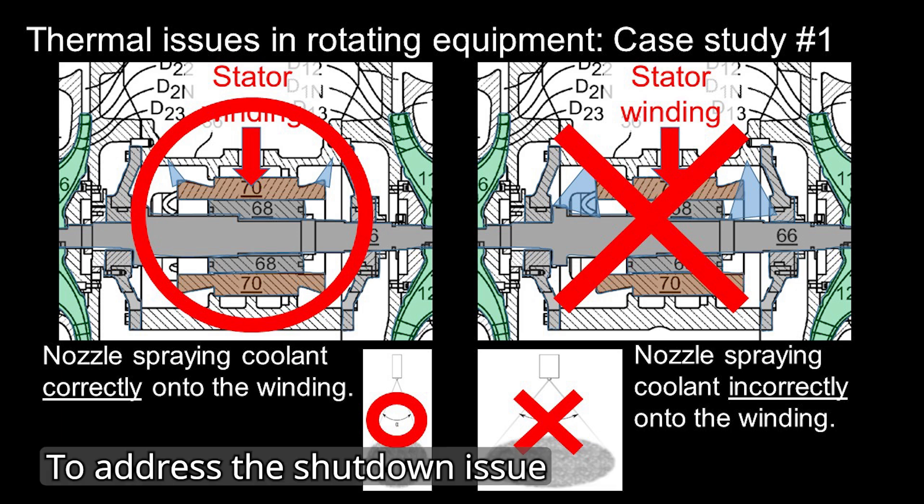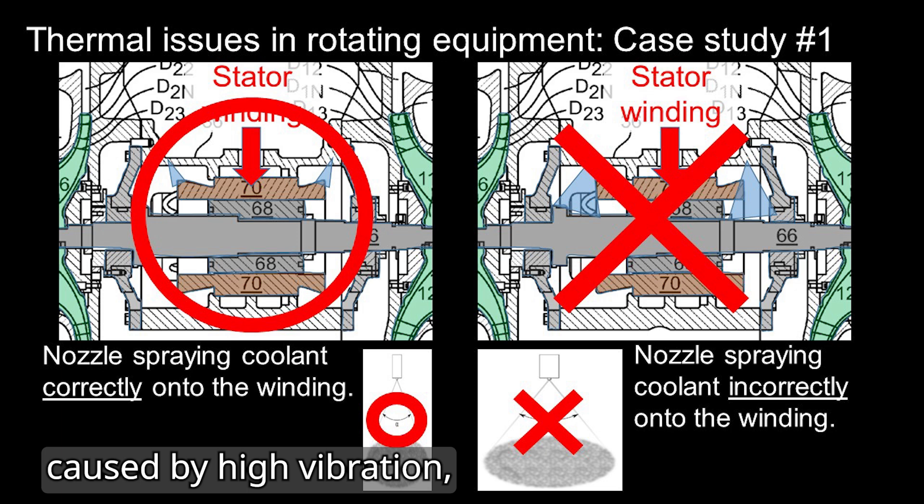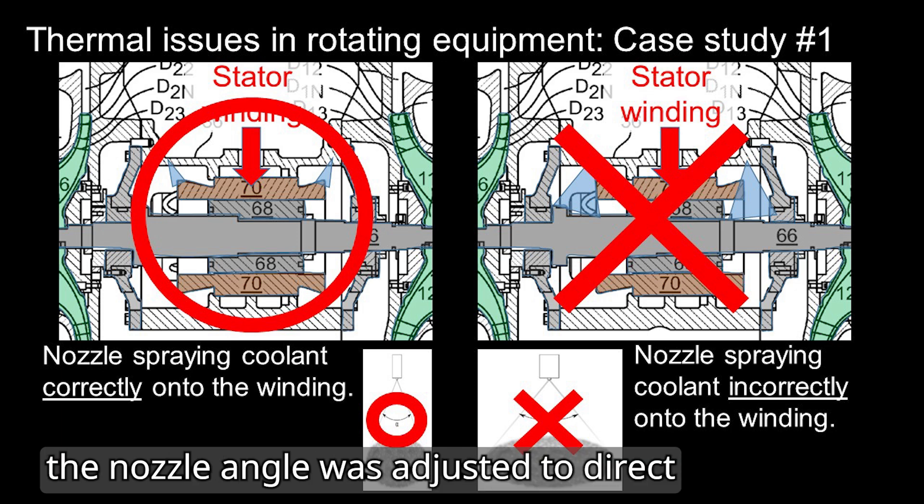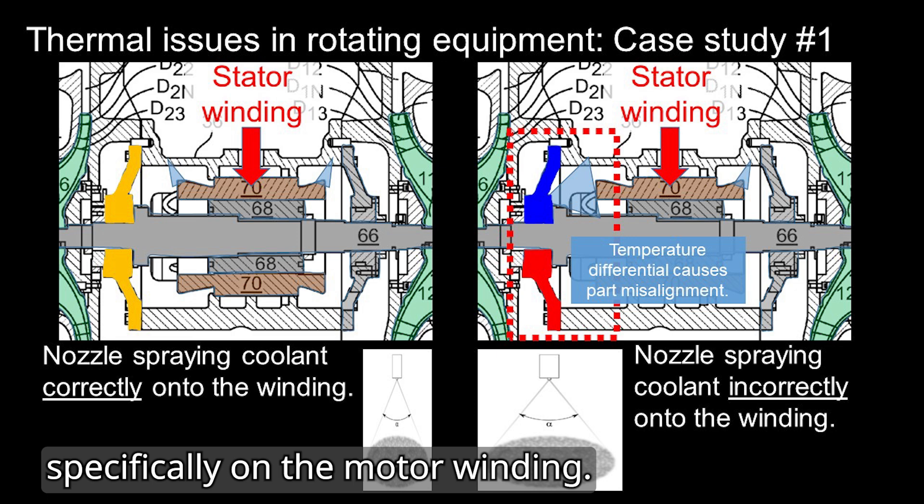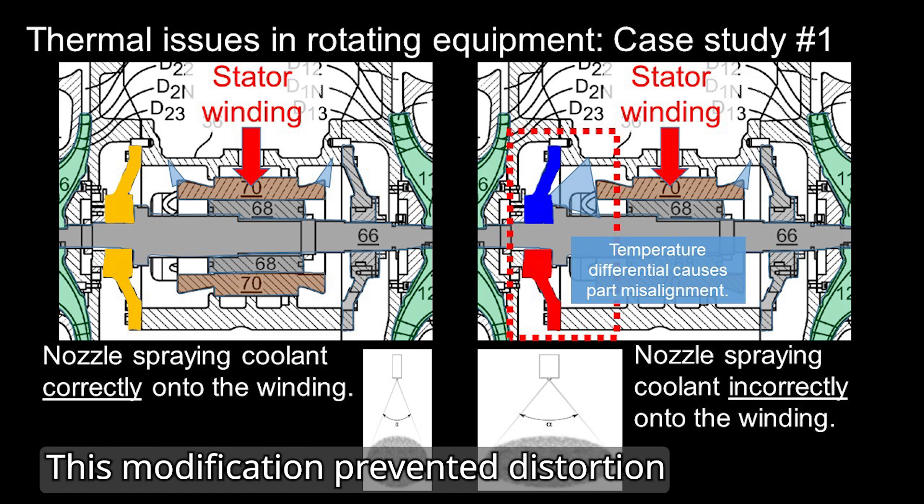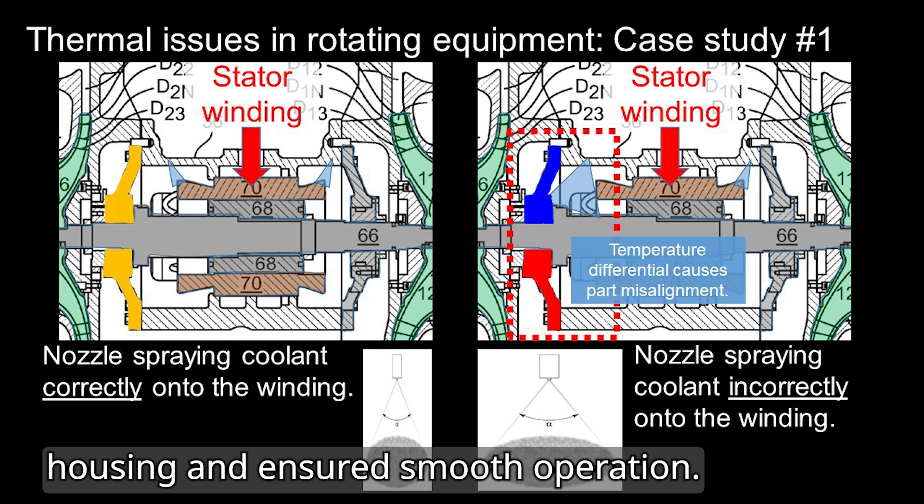To address the shutdown issue caused by high vibration, the nozzle angle was adjusted to direct cooling liquid flow specifically on the motor winding. This modification prevented distortion of the bearing housing and ensured smooth operation.